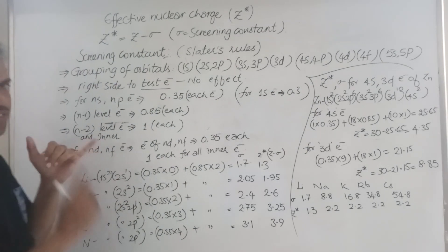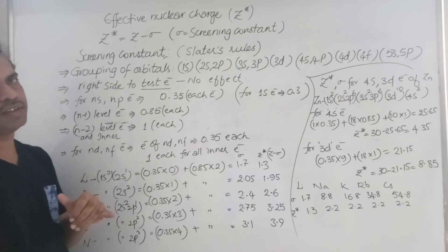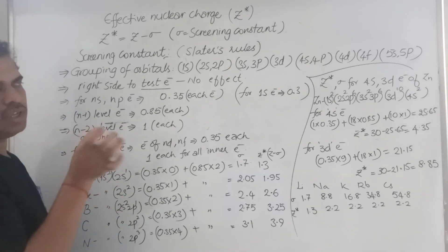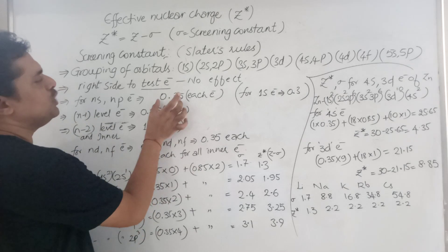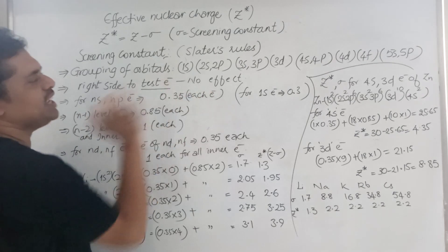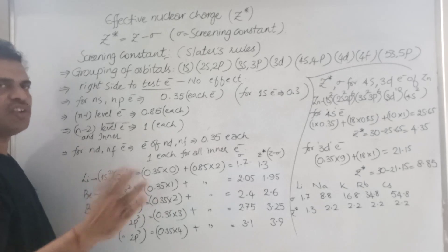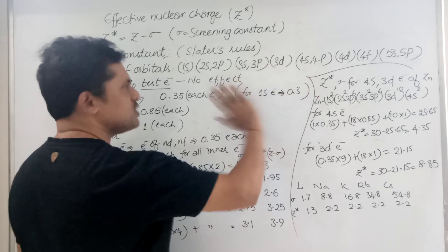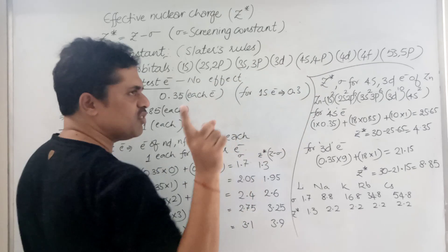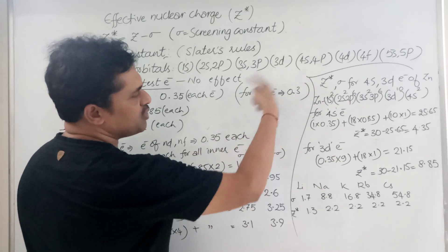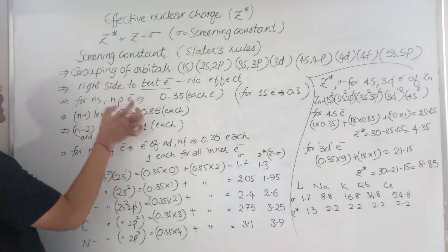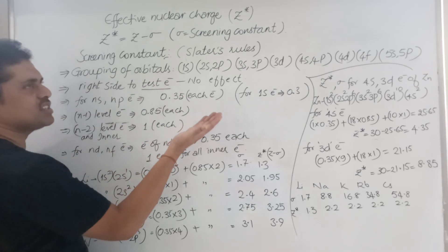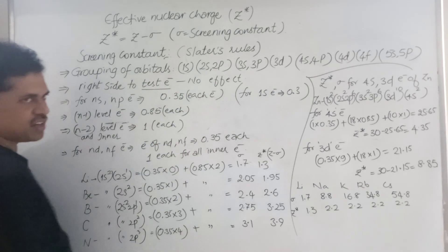If your test electron is present in the ns or np orbital, then to calculate the screening constant, you take 0.35 for each electron in the same shell. If you are discussing only about the 1s electron — that is the hydrogen or helium case — then for that 1s electron, the value is 0.3. This is purely an exception only for hydrogen and helium. For all remaining cases, even if a 1s electron is present, we consider 0.35. So for ns and np electrons, for each electron present in the same shell (excluding the test electron), take 0.35.